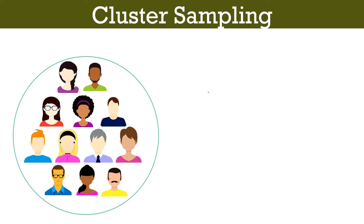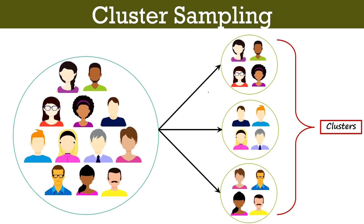In cluster sampling we first define the population. Suppose you want to know how many students would like to take maths — your population is the students studying in class 10. Then you divide the population into clusters, keeping in mind that each cluster's population should be highly diverse so all characteristics of the population can be represented, and each cluster should have a similar distribution of characteristics as the overall population.